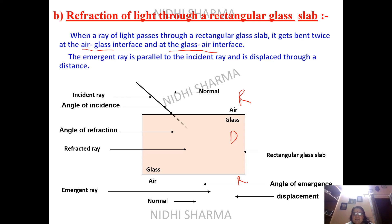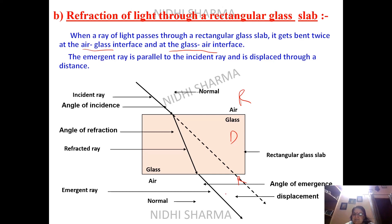This is the incident ray. It actually has to go straight, but because of the glass it bends towards the normal and comes out. You can see how it comes out — it has become parallel to the incident ray. This particular phenomenon is known as lateral displacement. The original incident ray and the emergent ray have become parallel.